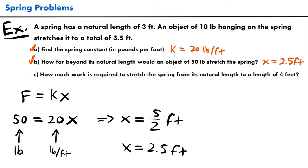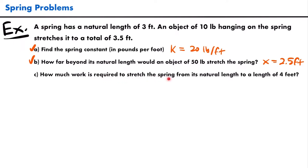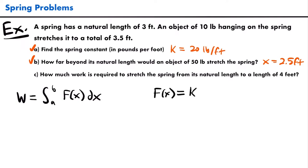For Part C, we use calculus. For a variable force, work equals the integral from A to B of the force function F(x) dx. For a spring, the force function is K times x. We already found K equals 20, so F(x) equals 20x. That will be the function inside our integral.